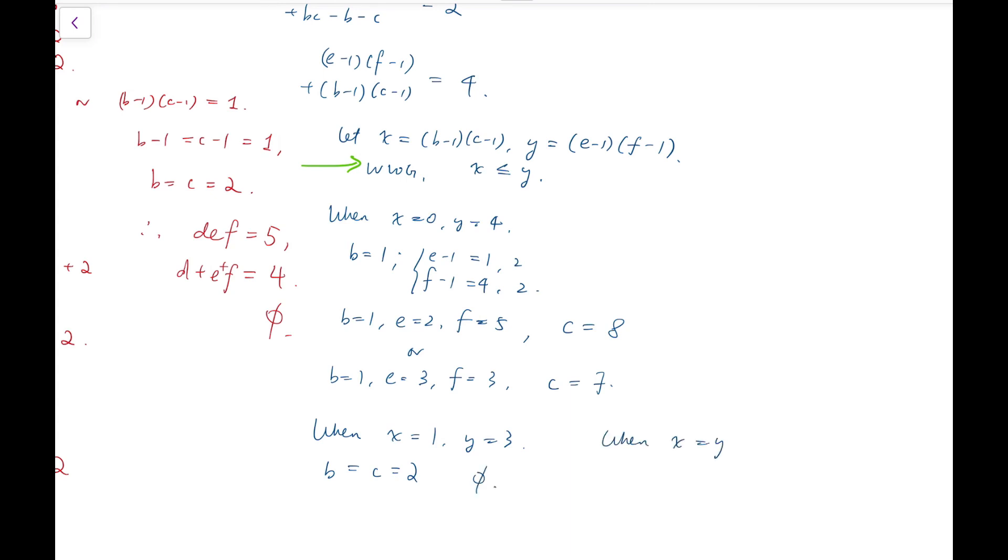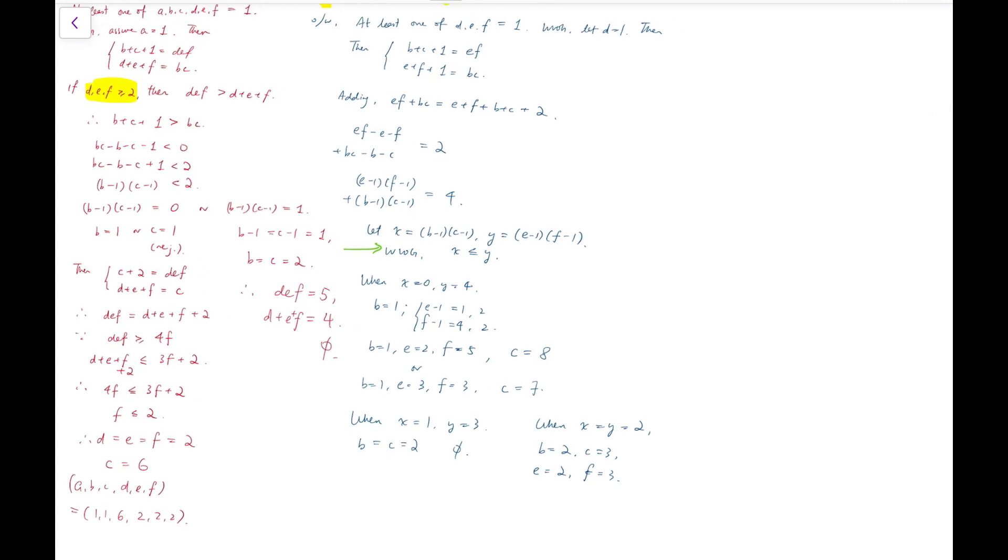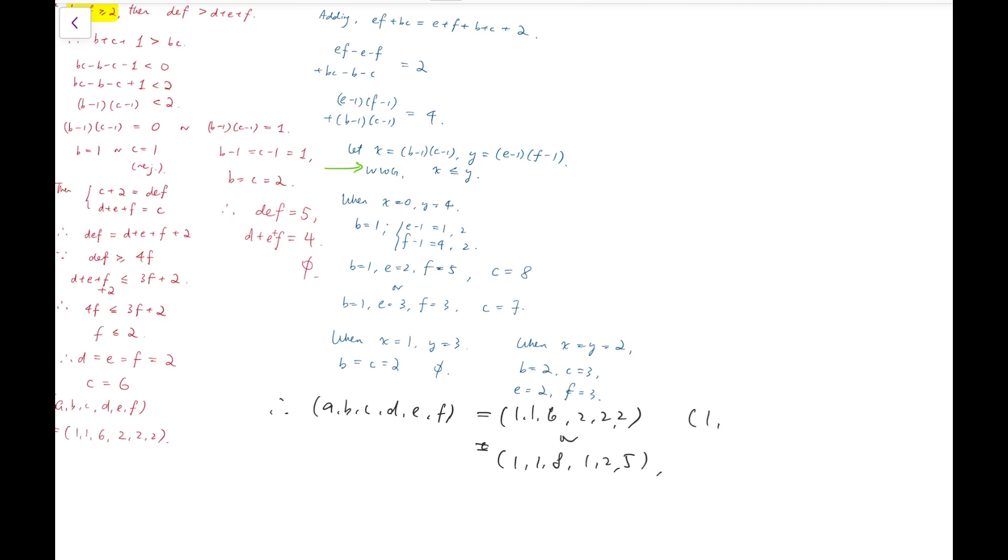And finally, when x and y are both two, then I will have b equals 2, c equals 3, and similar for e and f. So that means, altogether, I will have the solutions: (1, 2, 3) paired with (1, 2, 2), or (1, 1, 8, 1, 2, 5), (1, 1, 7, 1, 3, 3), and finally (1, 2, 3, 1, 2, 3), of course and their permutations, either about a, b, and c itself, about d, e, f itself, or swapping the entire group abc with the entire group def. And so these are our final answers.